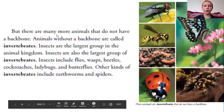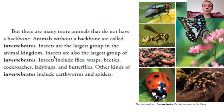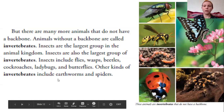But there are many more animals that do not have a backbone. Animals without a backbone are called invertebrates. Insects are the largest group in the animal kingdom, and they are also the largest group of invertebrates. Insects include flies, wasps, beetles, cockroaches, ladybugs, and butterflies. Other kinds of invertebrates include earthworms and spiders. We already drew a little picture of a worm — if you want to pause and draw any of these other invertebrates in your column for pictures, you can do that right now.